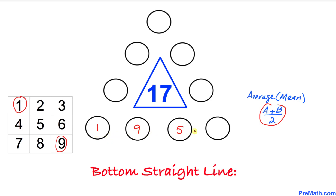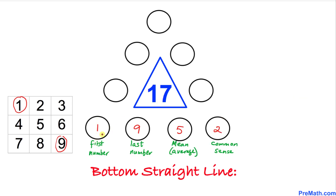The sum of all four circles must be 17. We have 1 + 9 + 5 = 15, so the remaining number must be 2. To recap: the first number is 1, the last is 9, the middle is the average of the two end numbers (5), and the fourth number (2) is determined by the requirement that all four sum to 17.